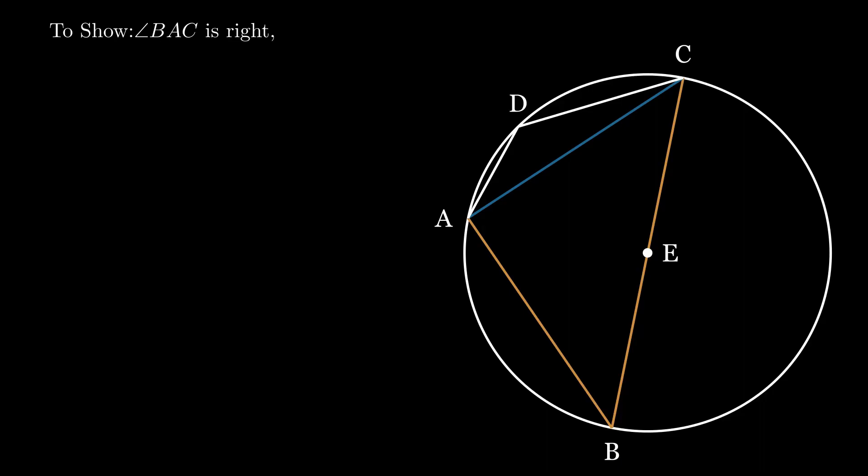Notice angle ABC. Its base is not a diameter, so it cuts the circle into a smaller segment and a larger segment. Angle ABC is in the bigger segment, and we want to show that angle ABC is less than a right angle.